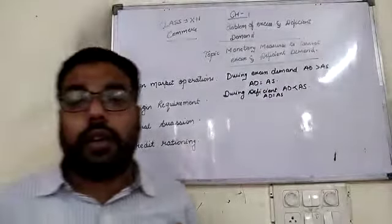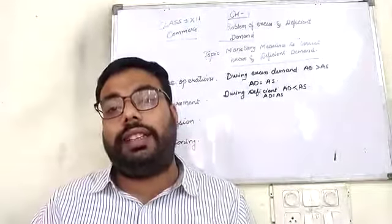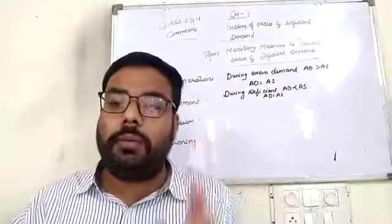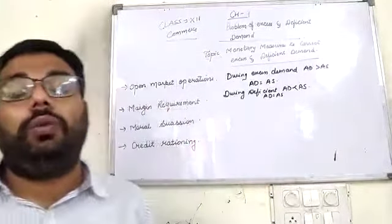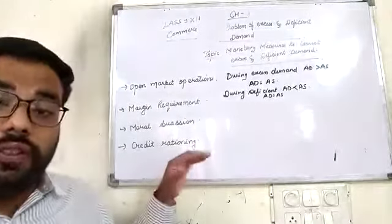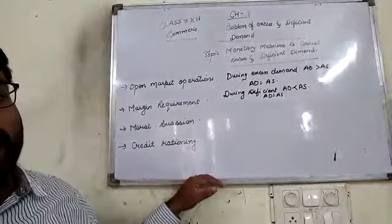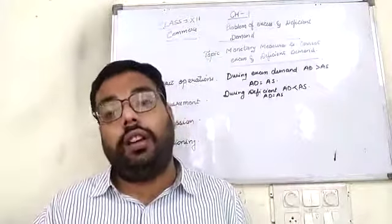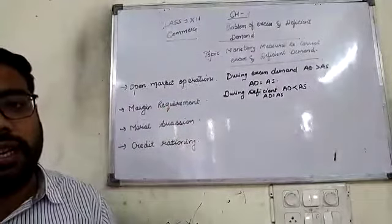Next is Credit Rationing. Credit Rationing means fixing of credit quotas. During excess demand, we fix less credit quotas — we give minimum credit. And during deficient demand, we fix more and more credit quotas, because money is needed in the economy. During excess demand, credit quotas are reduced because there is already too much money in the economy.